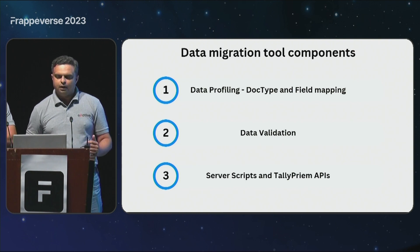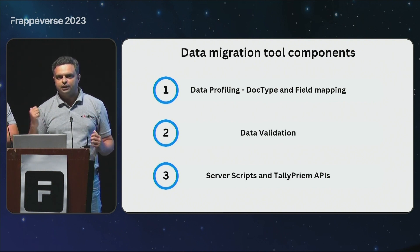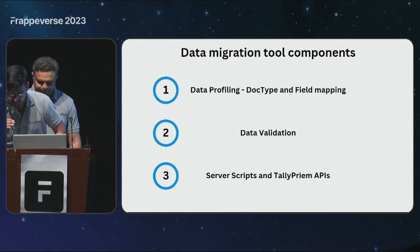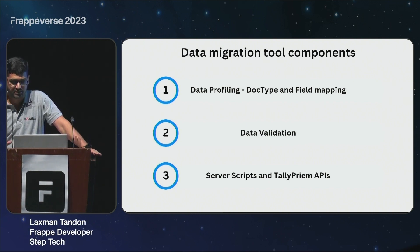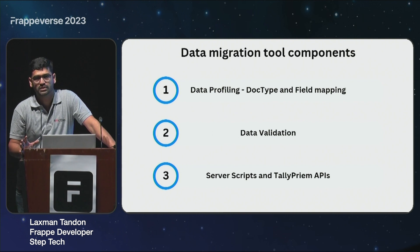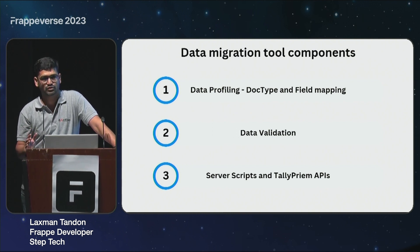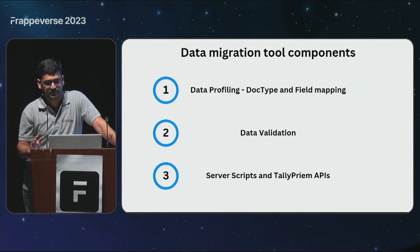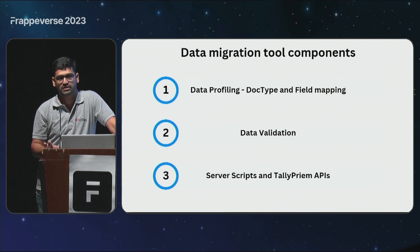What are the components? That's a little bit technical and I would ask Lakshman to present that. So this data migration tool involves basically three kinds of activities: mapping of data, validations, and a few APIs and server scripts.